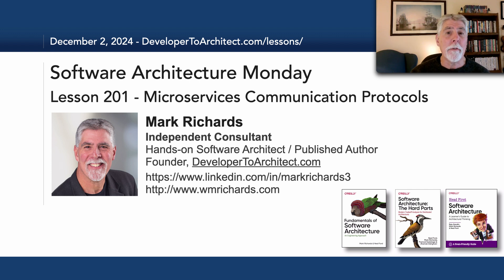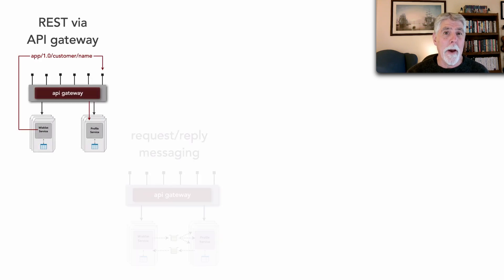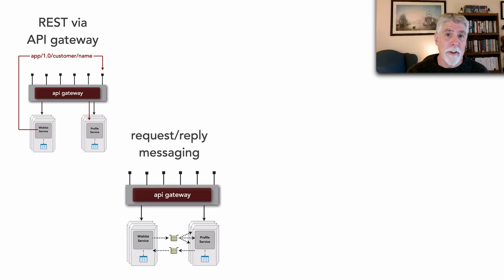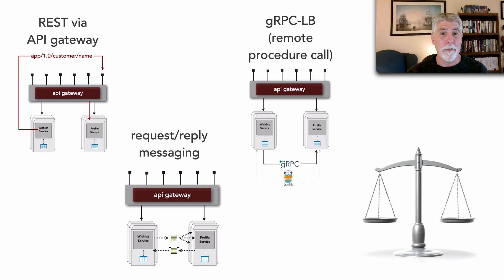Hello everyone and welcome to Software Architecture Monday. My name is Mark Richards and in this lesson 201 we'll take a look at microservices communication protocols and the various trade-offs between these. There are three kinds of basic protocols we can use between services in a microservices architecture: REST via an API gateway, request-reply messaging, and Google's remote procedure call, gRPC.